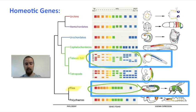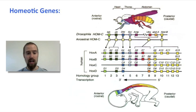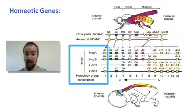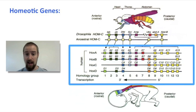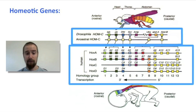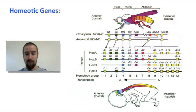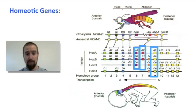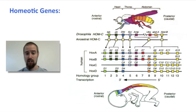Even humans have hox genes. We are animals, after all, and they are fundamentally similar to the hox genes possessed by fish and by fruit flies. As we can see, humans have multiple copies of some of these hox genes, and they are arranged slightly differently. But just like the hox genes in a fly control which cells become the head and which cells become the tail, our hox genes play a similar role in our development.